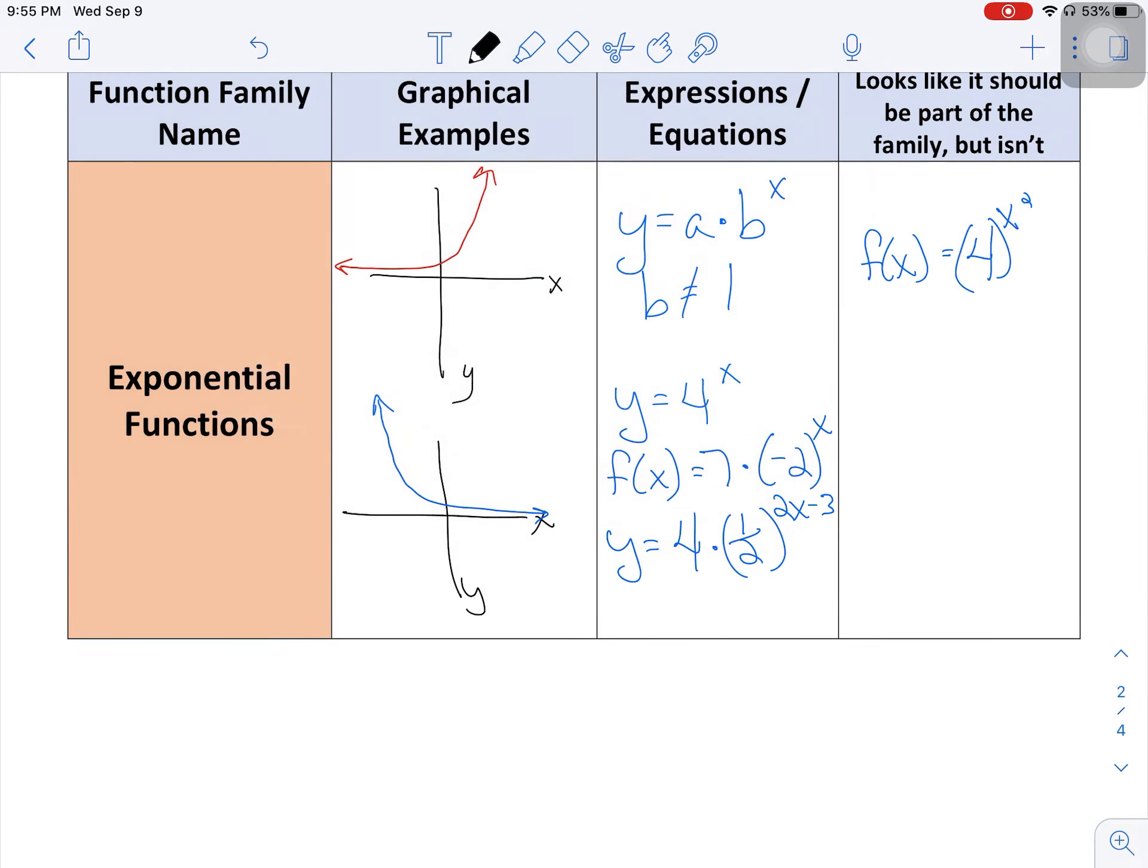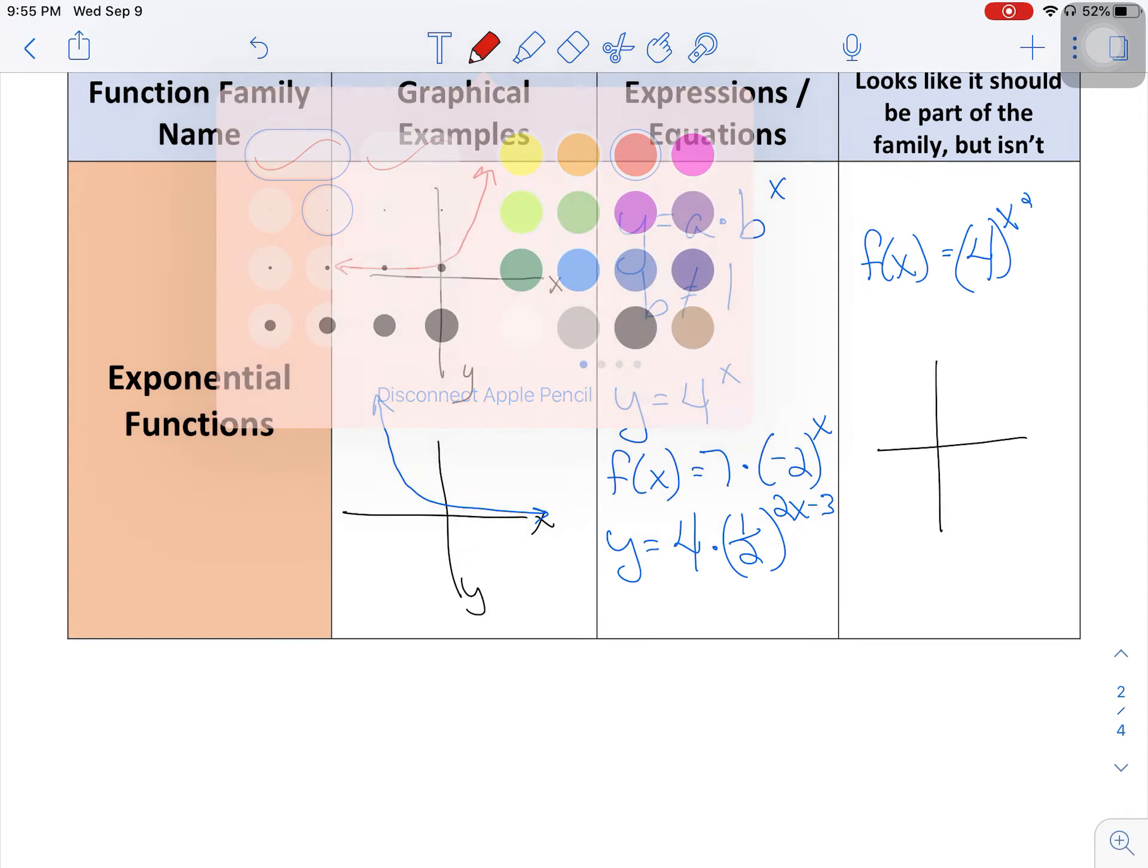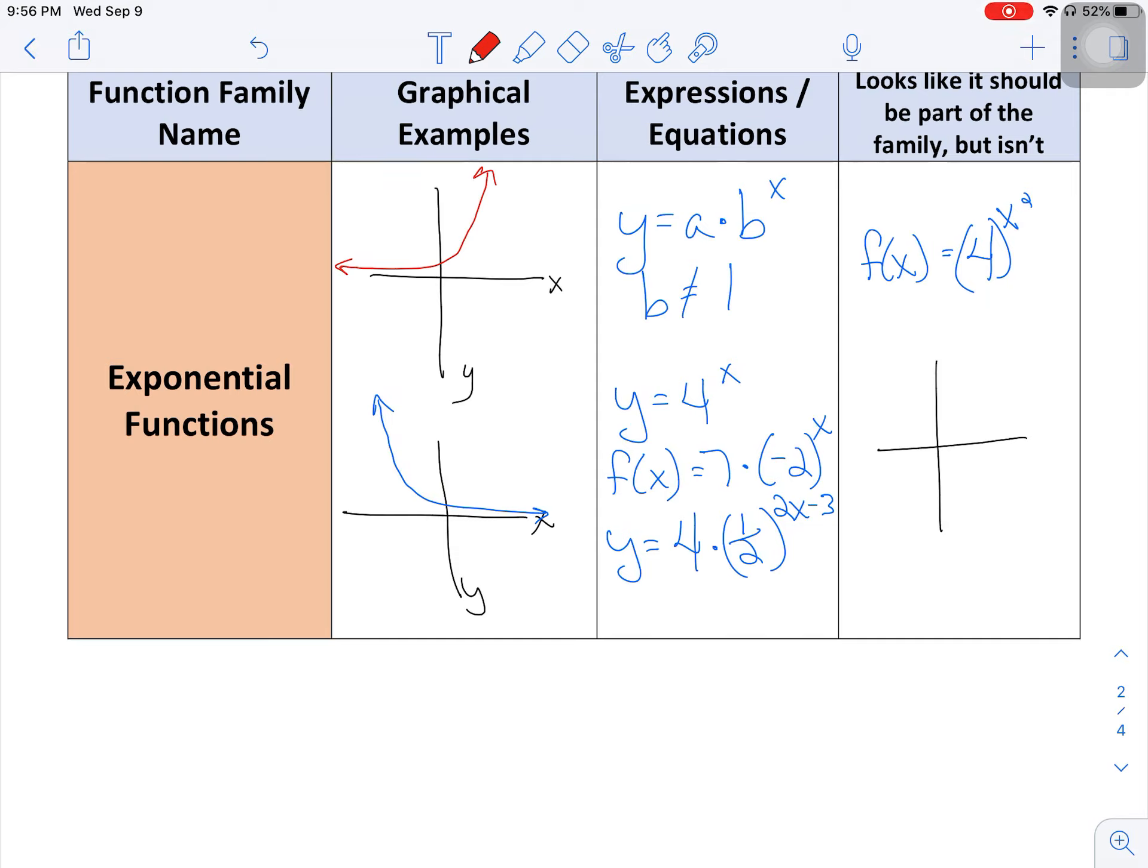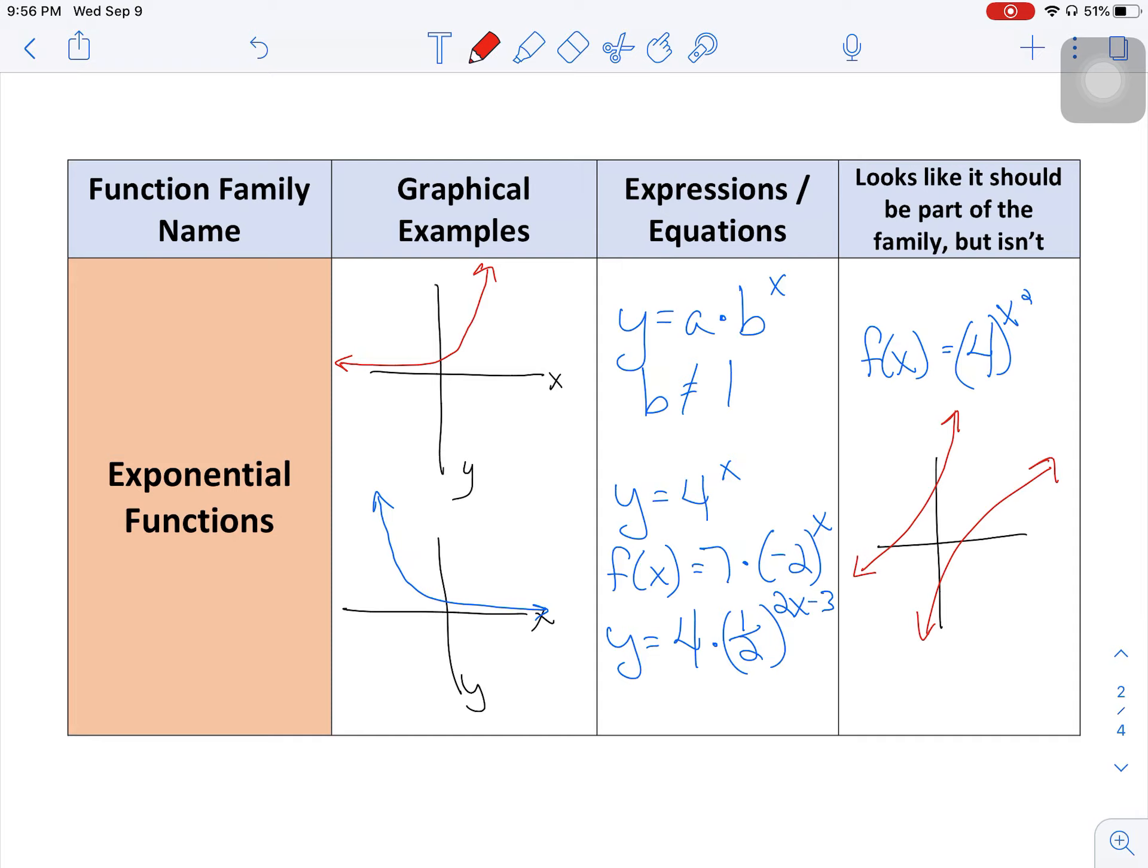Graphically, the only other thing that you might want to be careful about is there are functions that look like this and like this. And these are a different kind of function where you have basically a double set of curves. You'll notice that it's really not a drastic change at any point. And so you want to make sure that you really see that drastic change, either the decrease here leading to a gradual decrease or a small increase leading to a drastic increase. So hopefully this has helped to understand how to classify some graphs and some expressions into linear, exponential, or quadratic function families.